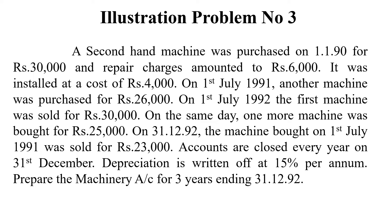Here is the second-hand machinery purchased on 1st January 1990 for 30,000 rupees. Repair charges are 6,000 rupees and it was installed at a cost of 4,000 rupees. So 30,000 plus 6,000 plus 4,000 gives a total of 40,000 rupees. On 1st July 1991, one more machinery was bought for 26,000 rupees.